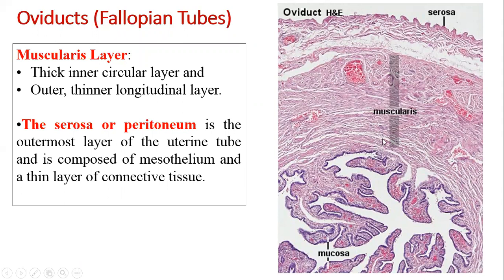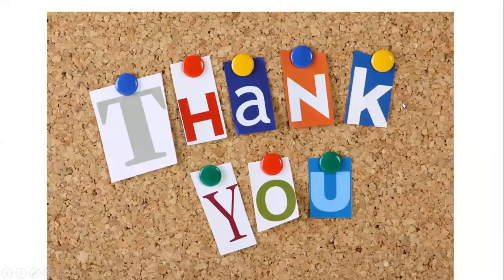Moving away from the lumen outward, past the mucosa, we have the muscularis layer with inner circular and outer longitudinal arrangement — visible in both longitudinal and transverse sections. Outside that is the serosa or peritoneum, the outermost layer composed of mesothelium and thin connective tissue. This concludes histology of the uterine tubes and uterus. Please read again and if there are any doubts, you can ask in the comment box. Thank you and have a nice day.